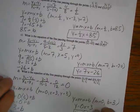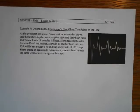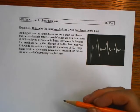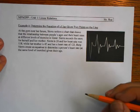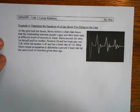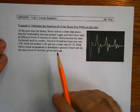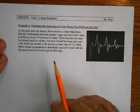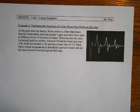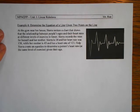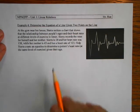Last page, last question — a quick application question. At the gym near her house, Ciara notices a chart showing that the relationship between people's ages and their heart rates at different levels of exercise is linear. She conducts her own experiments and records rates for herself and her mother. Ciara is 20 and her heart rate was 138, while her mother is 45 and has a heart rate of 123. Help Ciara create an equation to determine a person's heart rate at the same level of exercise given their age.